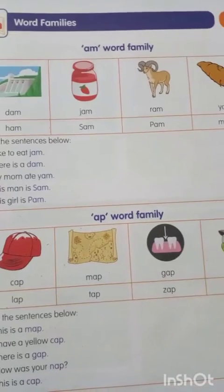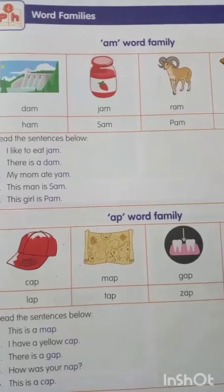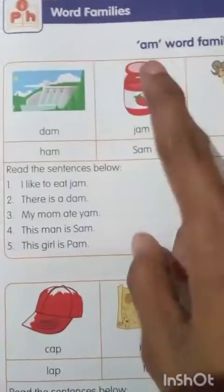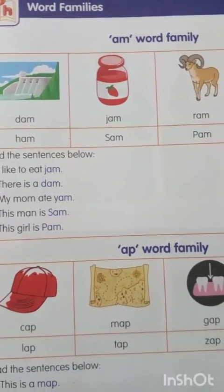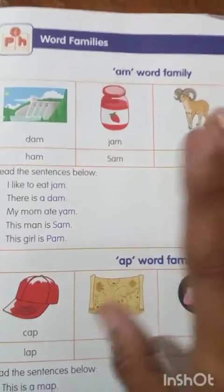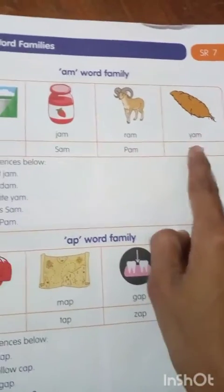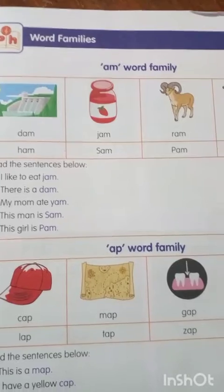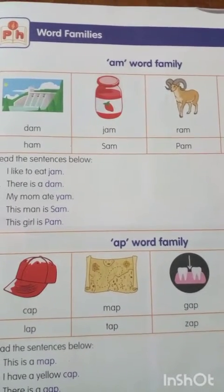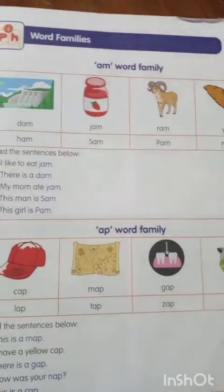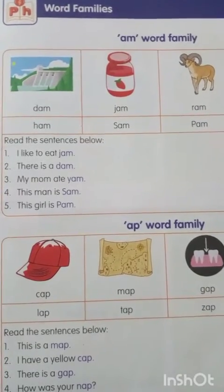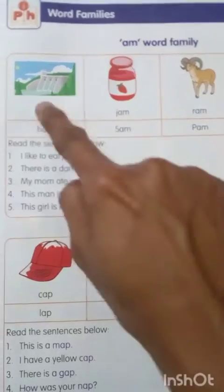Today we are going to learn three new word families: AM, AP, and AB. For the AM word family, words end with AM — these are rhyming words: dam, jam, ram, yam, mam, pam, sam, ham. Can you say some other words with AM? That is your task — write some new words with AM. Sentences given include: I like to eat jam. There is a dam. My mom ate yam.